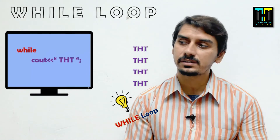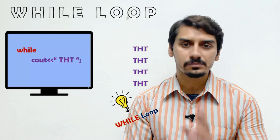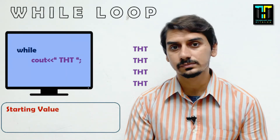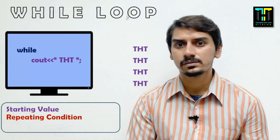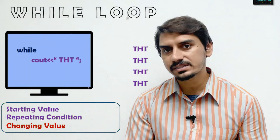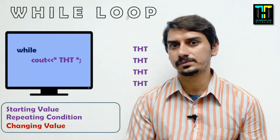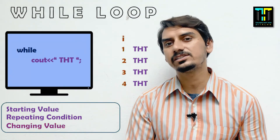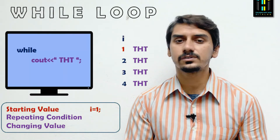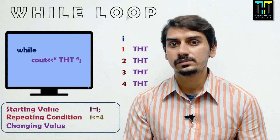When working with a while loop, you have to remember three things: first is the starting value (initialization), second is the repeating condition, and third is changing the value. Let's see how we can use these three things in our code. For the initialization, if we want to display 'tst' four times, we take a variable i that starts from 1.